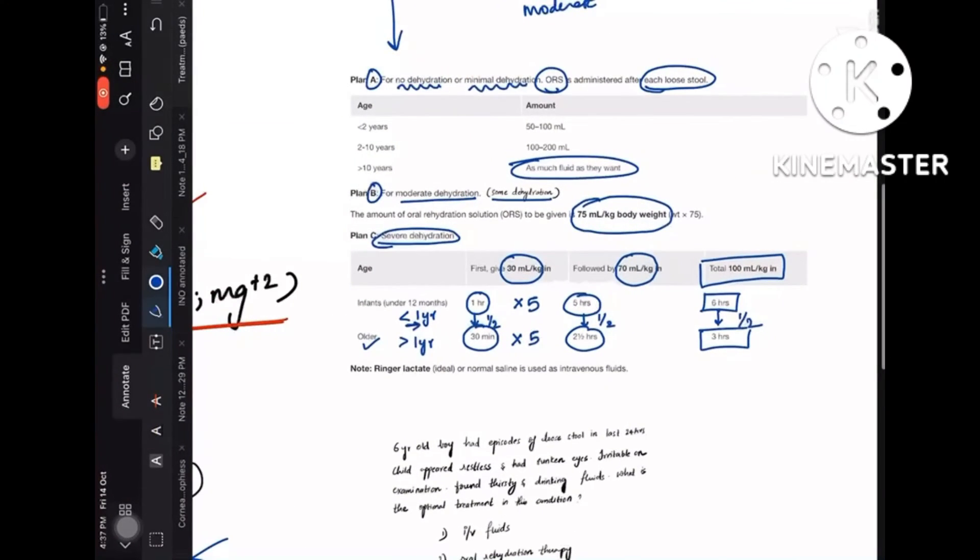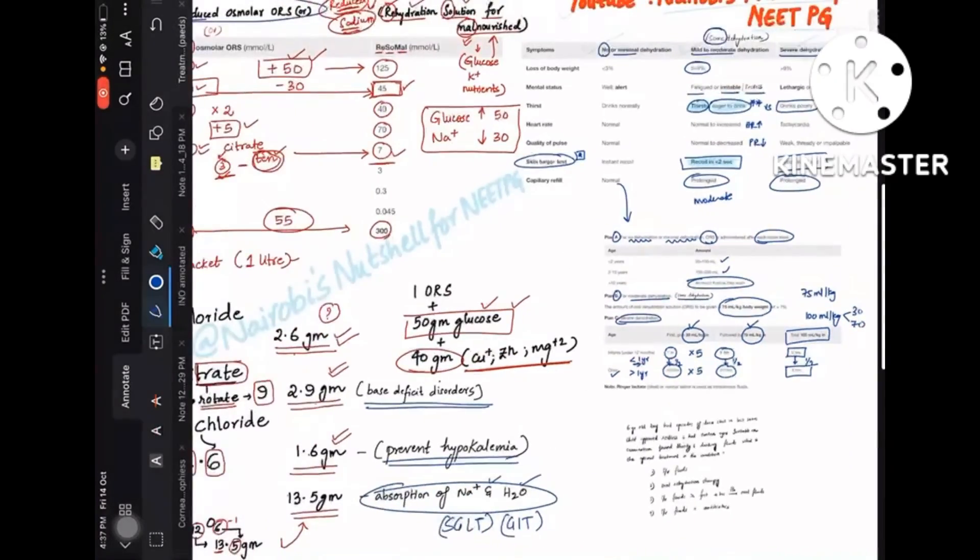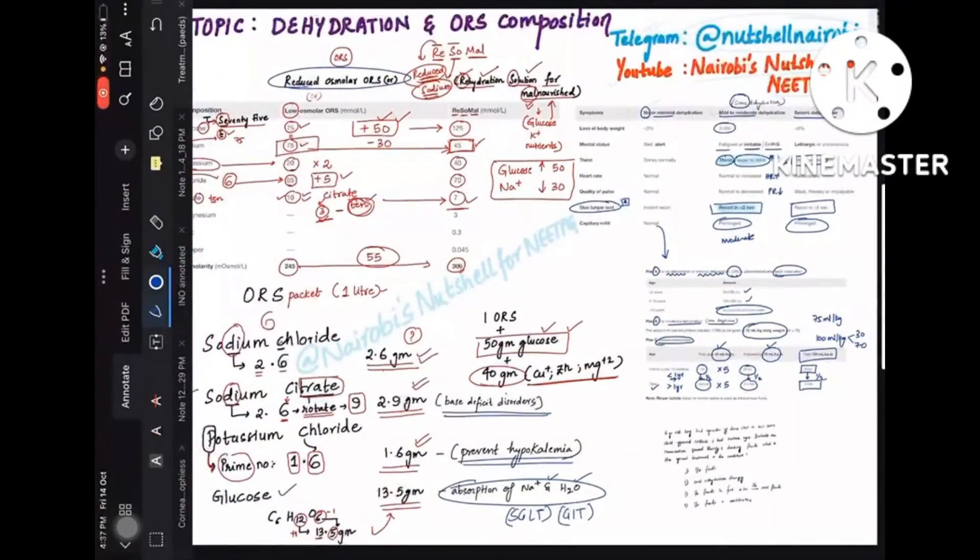So initially it is based on the age, and the second column is 75 ml per kg. And the third column, that is severe column, is 100 ml per kg. That also you divide into 30 and 70. So this is what I wanted to explain in ORS solution and the dehydration treatment.